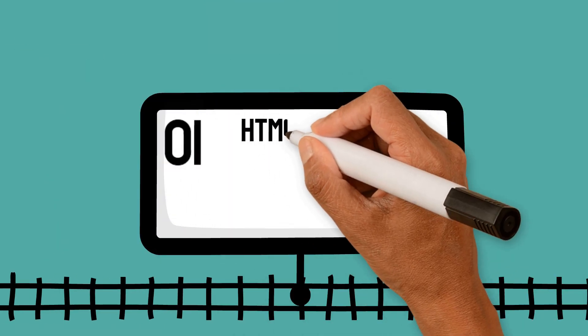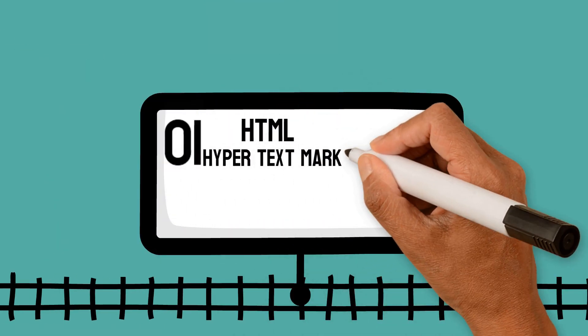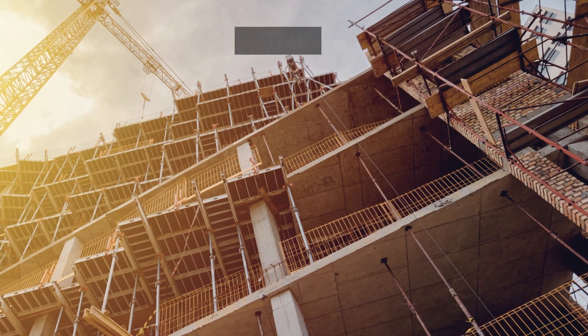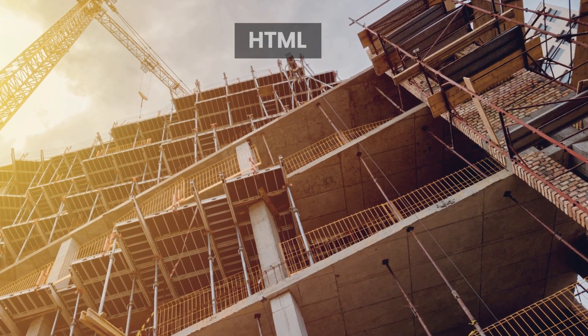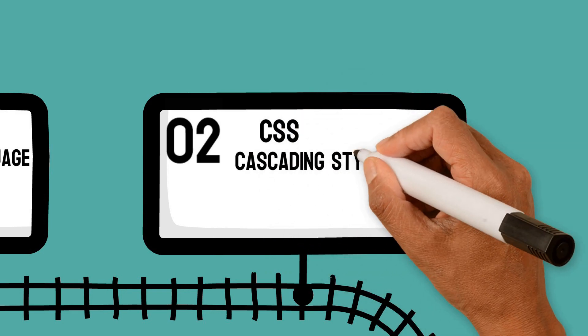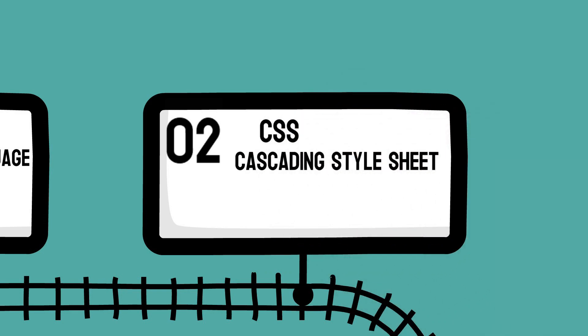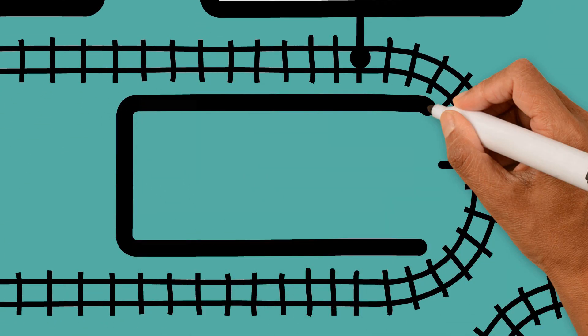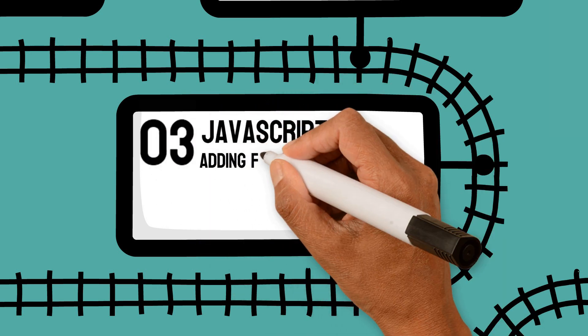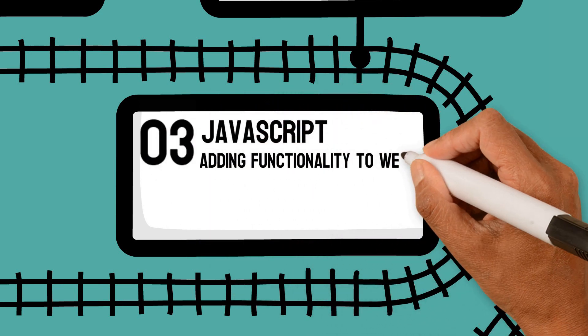HTML is short for Hypertext Markup Language — we use it to define the building blocks of our webpages. CSS is short for Cascading Stylesheet and is used for styling webpages and making them beautiful. JavaScript is used for adding functionality to webpages.